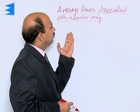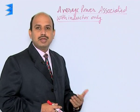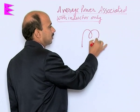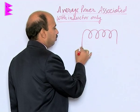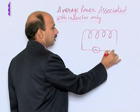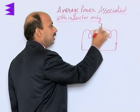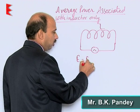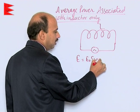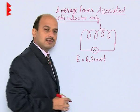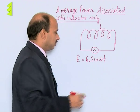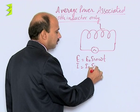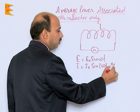Now, see the average power associated with an inductor only, that is the pure inductor. Suppose you have taken an inductor like this and applied an AC source. You have to calculate the average power associated with this inductor. We know E is equal to E naught sin omega t — the EMF applied at any instant — and we have calculated I is equal to I naught sin of omega t minus pi upon 2.